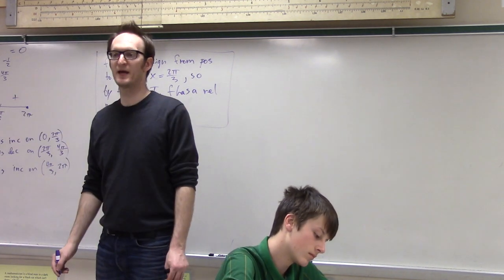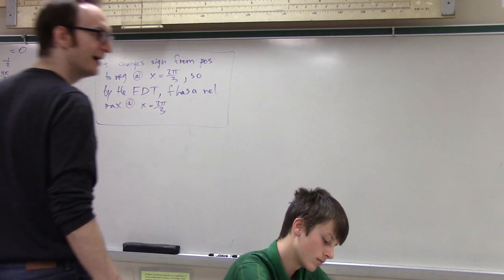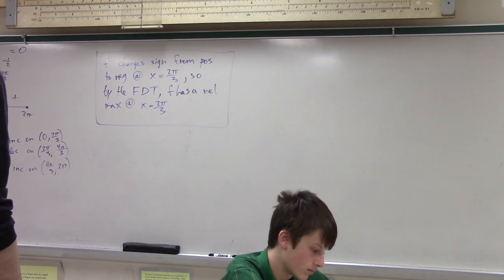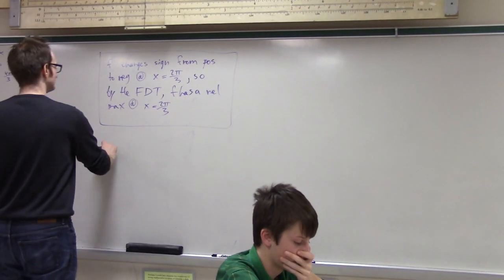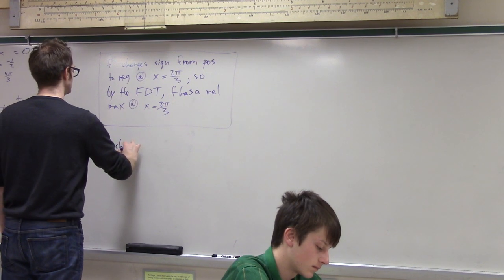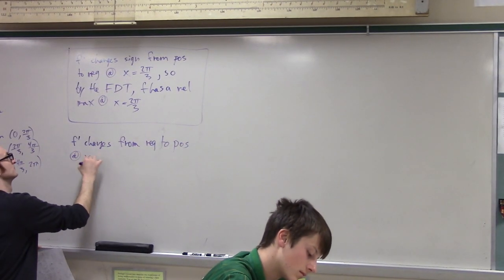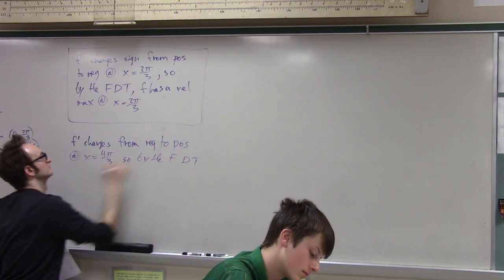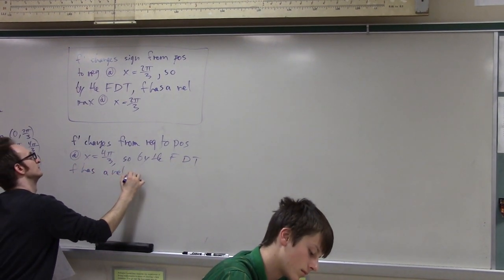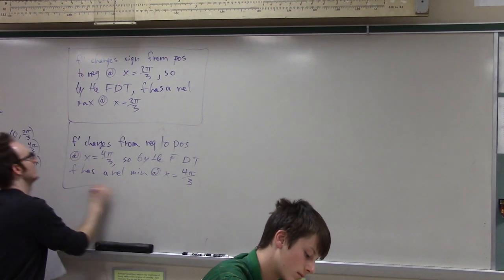Where else is there a relative extrema? 4 pi over 3. Magna, give me the justification for the relative min. Where is that relative min? At 4 pi over 3. The f prime changes sign from negative to positive at x equals 4 pi over 3. Therefore by the first derivative test it has a relative min at x equals 4 pi over 3. Can you guys handle that? I think you can.